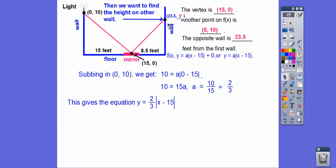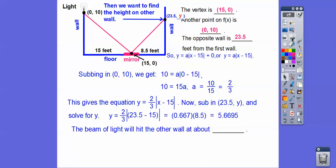Now all we got to do is substitute in this point right here. This is x, this is y, and then we're going to solve for y right there. And that's going to give us our height of the other wall. So we're going to substitute that in, solving for y. Remember, we're looking for y, so 23.5. And then I changed two-thirds to a decimal, which is 0.667. And then 23.5 minus 15 is 8.5. And then multiply those out right there, and we get y equals 5.6695. And then so the beam of light will hit the other wall at about 5.7 feet.